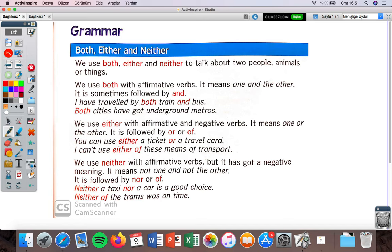What is both, either, and neither? We use both - let's start with both. By the way, please open page 103 in your books. We use both with affirmative words, positive words. It means one and the other. So we are talking about two things and we are talking about both of them, one and the other.